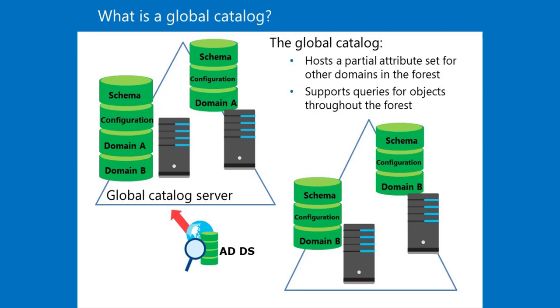A global catalog is a partial, read-only, searchable copy of all the objects in the forest. It speeds up searches for objects that might be stored on domain controllers in a different domain in the forest.